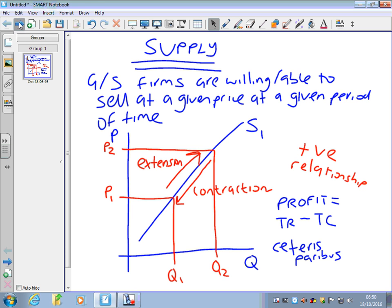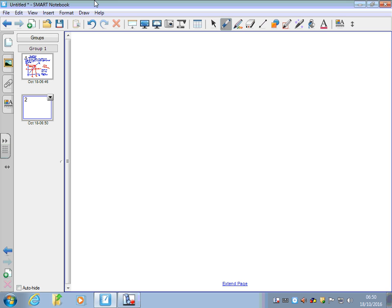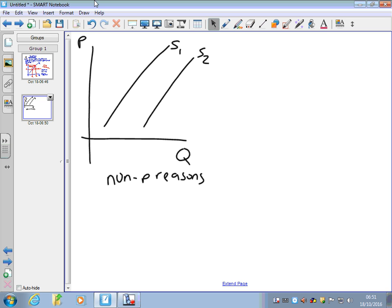But what we now need to think about are shifts in a supply curve. What we looked at along the supply curve was price reasons why supply might change. What we're now going to be looking at are non-price reasons. Look at this diagram here, we've got an outward shift in supply. There are a whole host of reasons that could cause this.